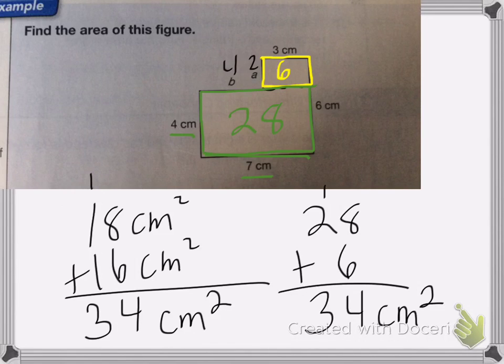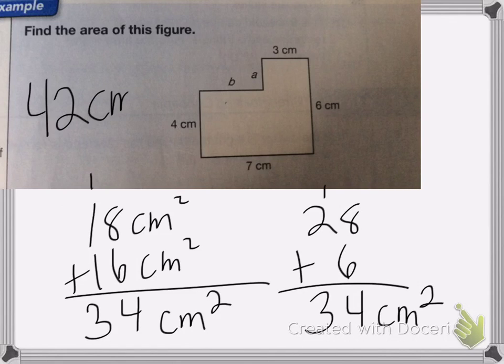Let me show you what happens if I don't break it up and I just multiply 7 times 6. So 7 times 6 is equal to 42 centimeters squared. That gives me the area of this entire box, all the way up and over. Well, this section here, I don't need. I don't have a box there. So it gives me too much area for my shape.